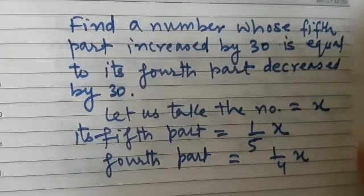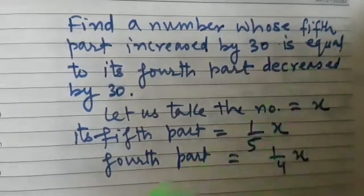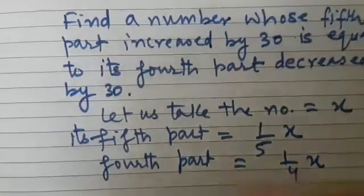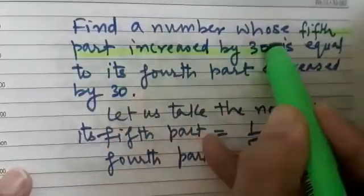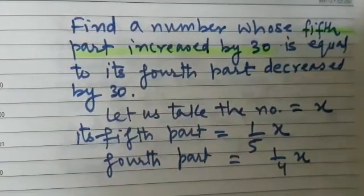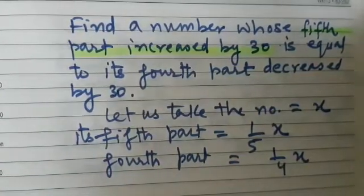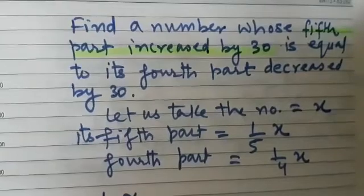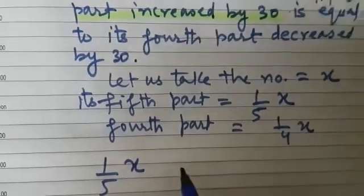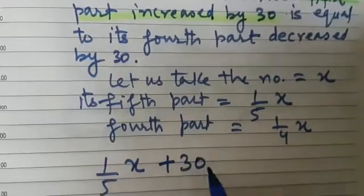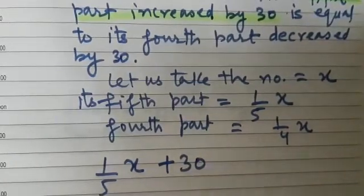So let us interpret this statement. The statement is fifth part increased by 30. How do you interpret this? So fifth part is 1 by 5x increased by 30. That means 1 by 5x plus 30 is equal to